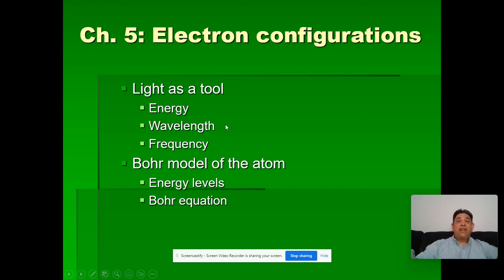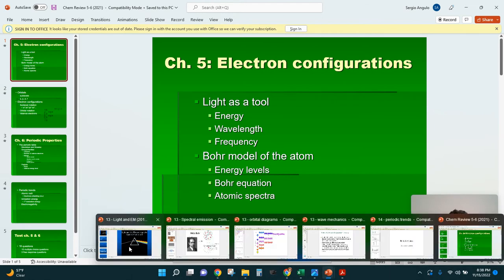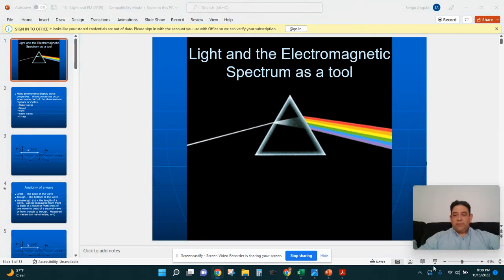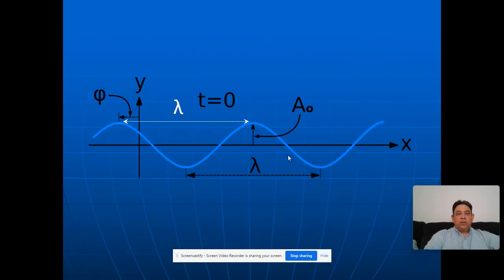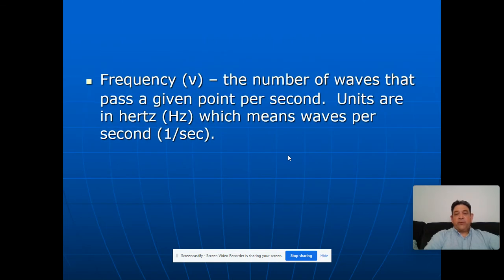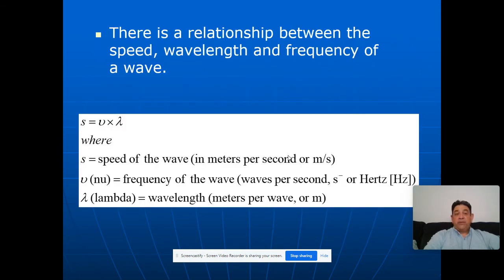We weren't really studying light to study light. We're studying light as a tool to understand what's going on inside the atom. So we learned different properties of energy, frequency, and wavelength. There's a whole PowerPoint on light as a wave and some wave properties. We talked about waves and parts of a wave, including wavelength. Wavelength and frequency — how many waves passing a given point per second — relate to the speed of a wave.